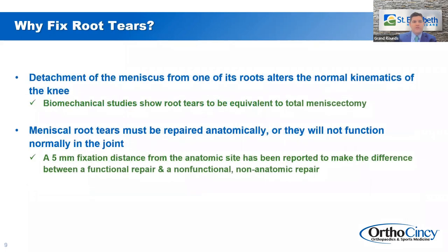Why fix these root tears? The key understanding is that detachment of the meniscus from one of its roots alters the normal kinematics and biomechanics of the knee. Biomechanical studies show root tears to be equivalent to a total meniscectomy. Even though the meniscus is all there inside the knee joint, it cannot appropriately distribute forces between your femur and tibia, resulting in earlier cartilaginous changes. No meniscal root detachment equals increased conversion to early arthritis because it changes contact pressure significantly.